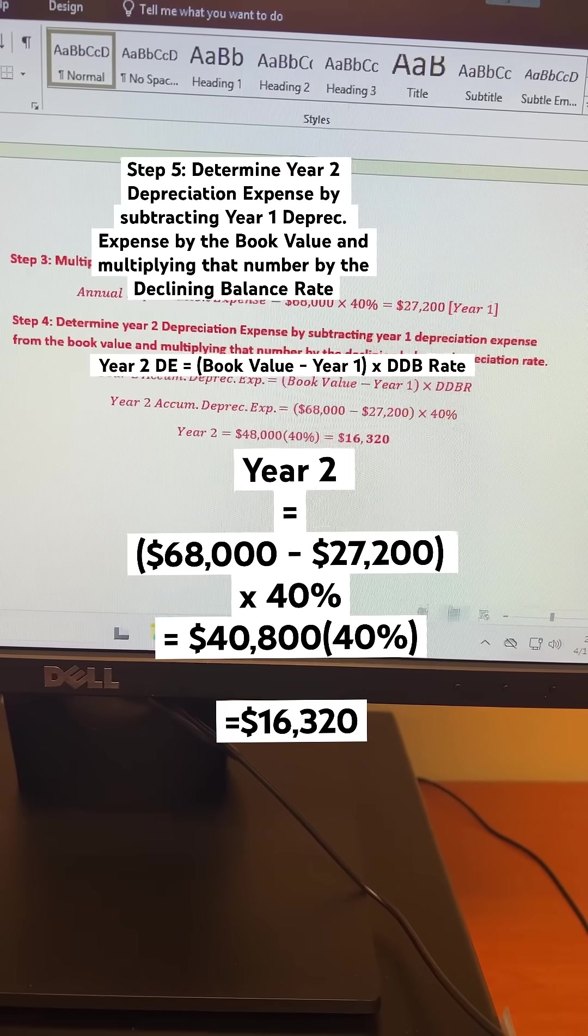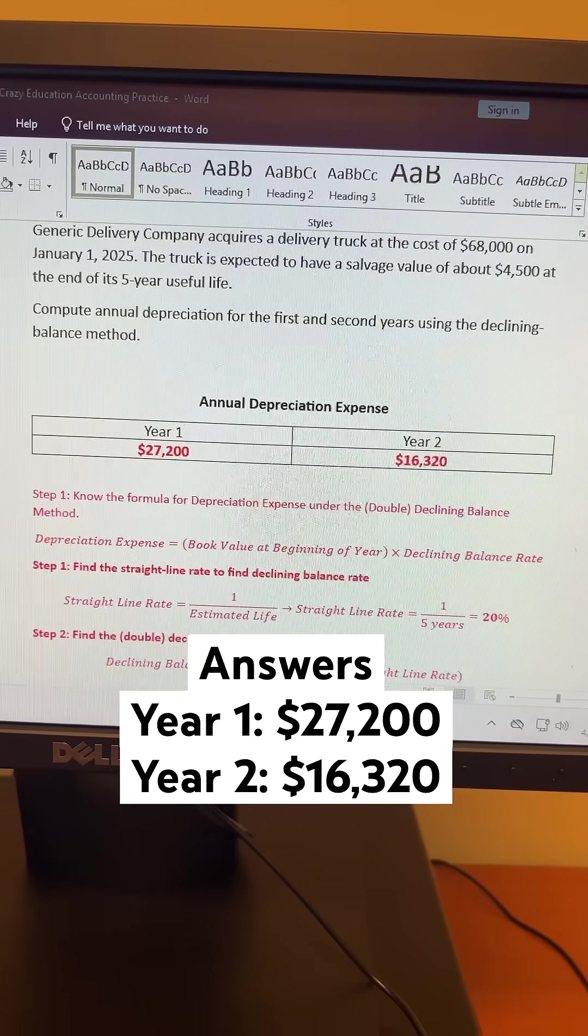After that, you're going to get $16,320 for year 2. And now you're done.